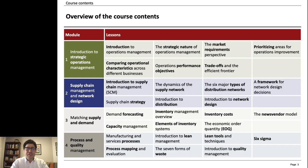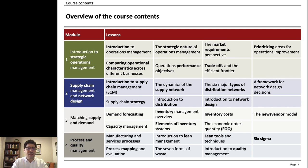This course is divided in four modules. On the first one, we talk about strategic operations management as an introduction and we compare the operational characteristics across different businesses. We talk about performance objectives of operations, trade-offs, and about how to prioritize areas for operations improvement.